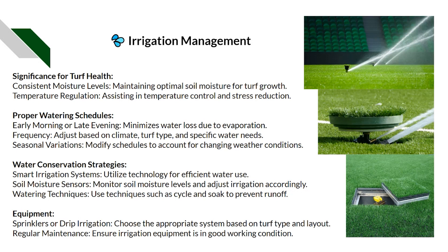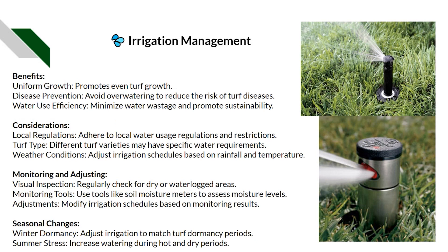Equipment options include sprinklers, drip irrigation, and hand watering. It depends on the situation — the site type and layout may mean you can't get irrigation into certain places. Regular maintenance of the turf and irrigation equipment is important. Different sprinkler heads and nozzles change the throw, pressure, and water rates — all things that need to be considered. The benefits are promoting growth, avoiding overwatering to reduce disease risk, and minimizing water use to promote sustainability.